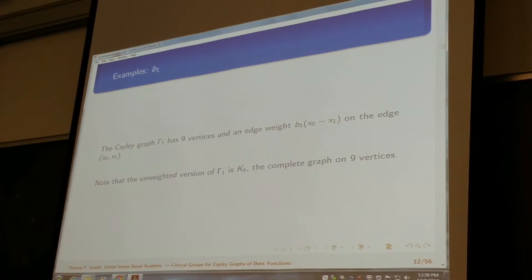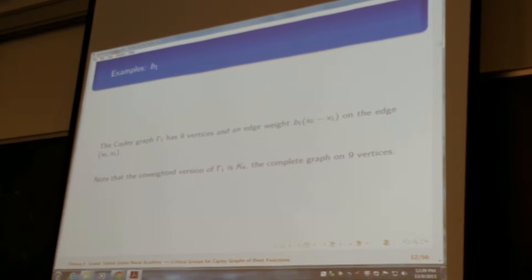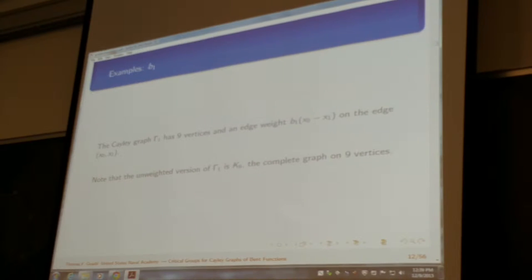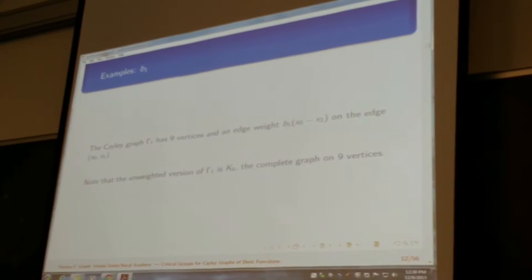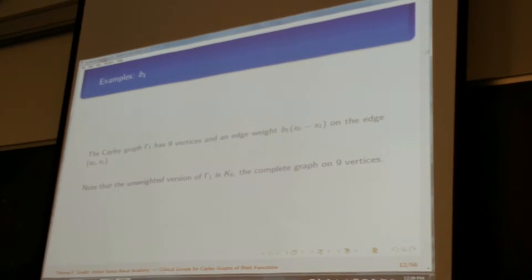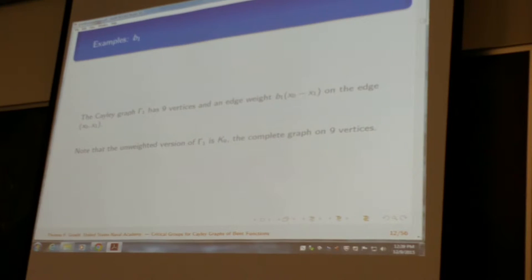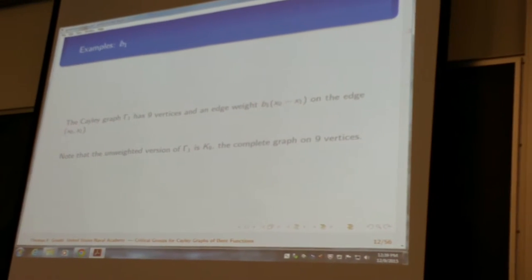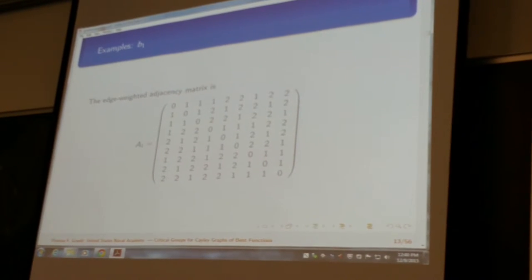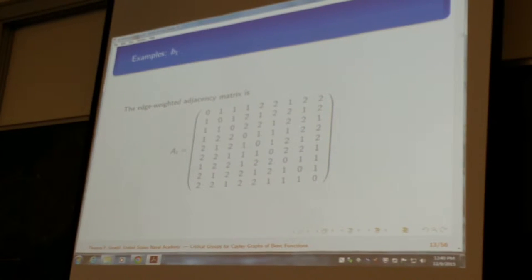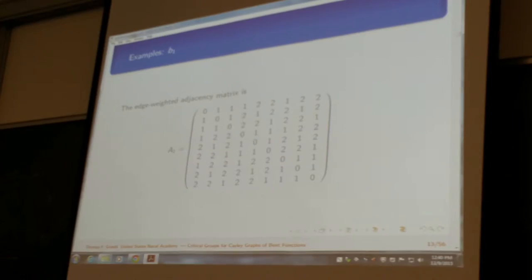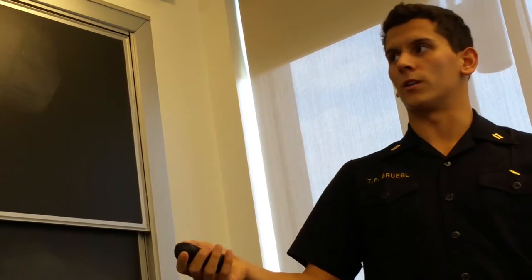So, more on B1, the Cayley graph of B1, we call gamma sub 1, has 9 vertices, and the edge weight is B sub 1 of x0 minus x1 on that edge. The unweighted version of gamma sub 1 is the complete graph on 9 vertices. Just kind of interesting to note the difference between the unweighted version and the weighted version.